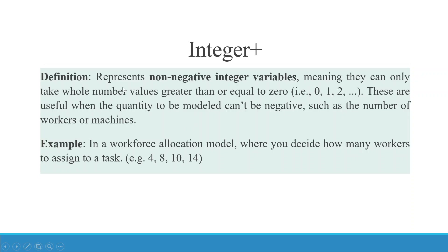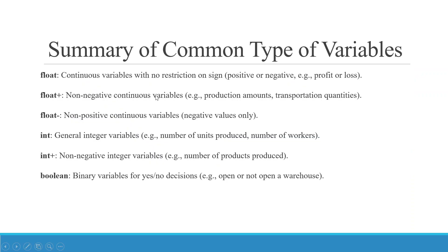Integer plus represents non-negative integer variables, meaning they can only take whole number values greater than or equal to zero — that is, 0, 1, 2, and so on. These are useful when the quantity to be modeled cannot be negative, such as the number of workers or machines. For example, in a workforce allocation model where you decide how many workers to assign to a task, example values are 4, 8, 10, and 40.